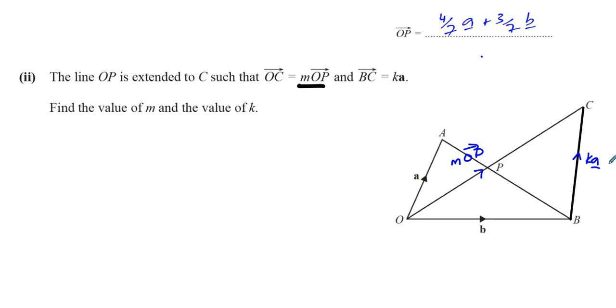Now we can see that this is the vector a. O to A is the vector a. And B to C is the vector ka. So these two vectors are actually parallel, even though they don't look like they're parallel. They are actually parallel because these diagrams are not to scale.